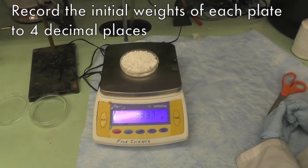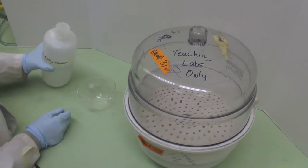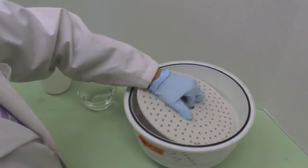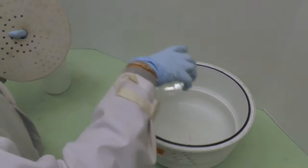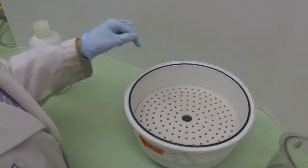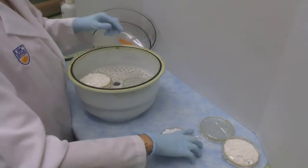Record the initial weight of each plate. Pour saturated potassium nitrate solution into the glass container and place it at the bottom of the desiccator. Replace the porcelain plate, then place all the plates into the desiccator.